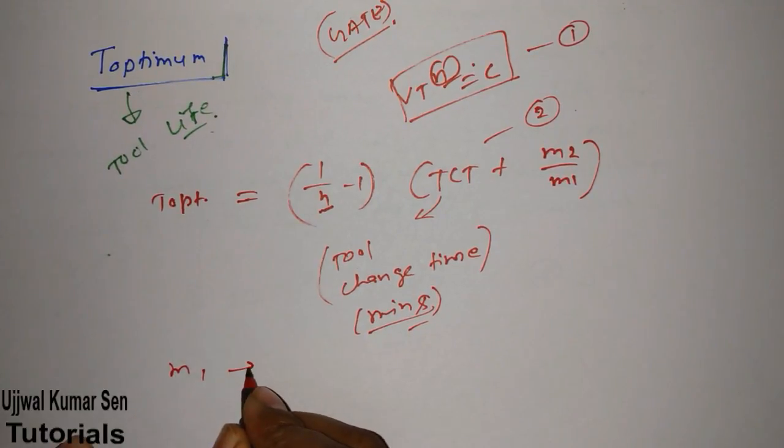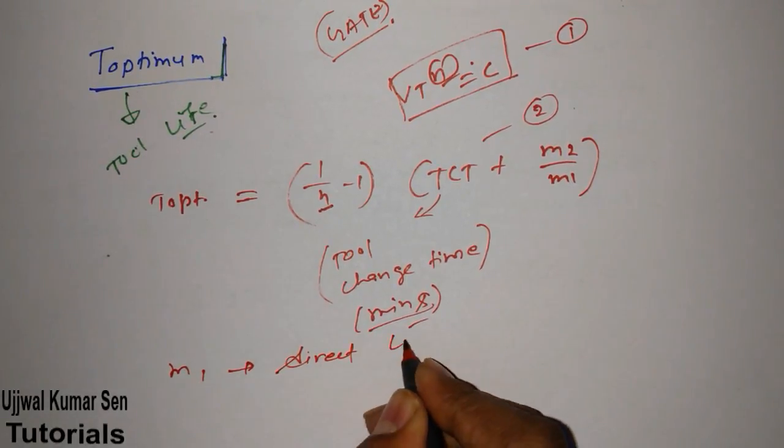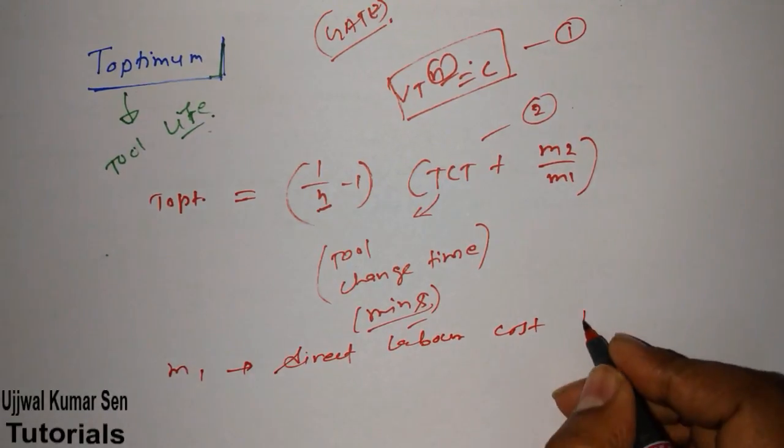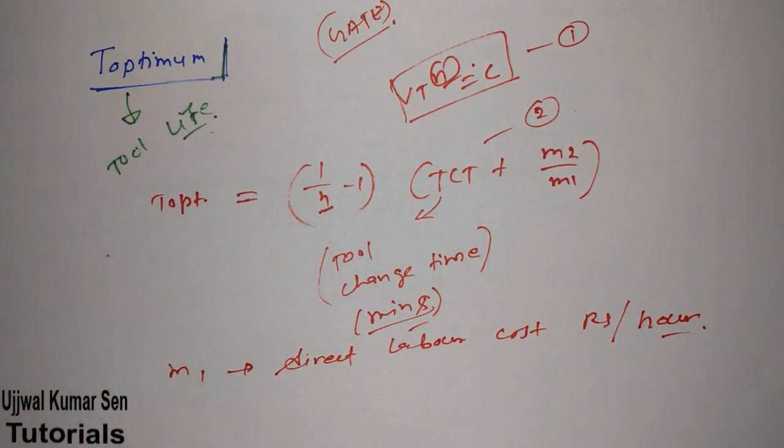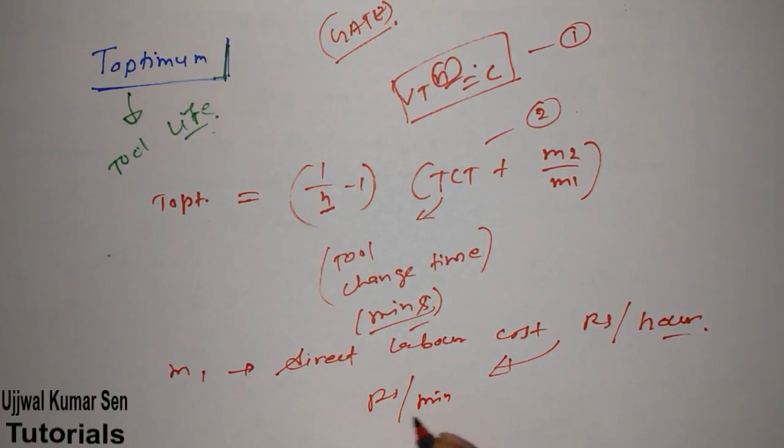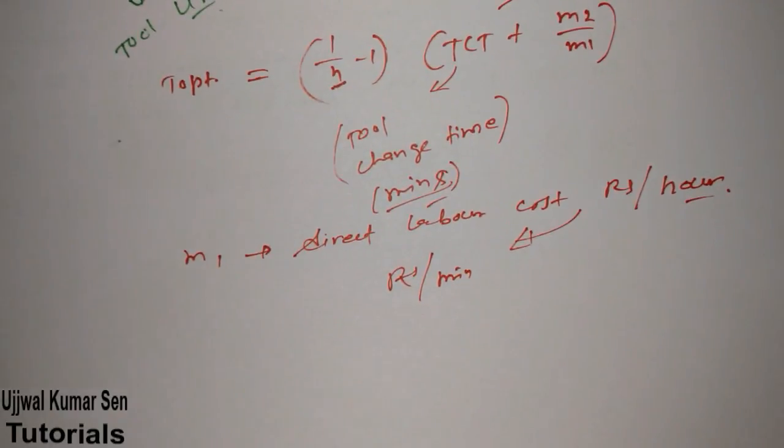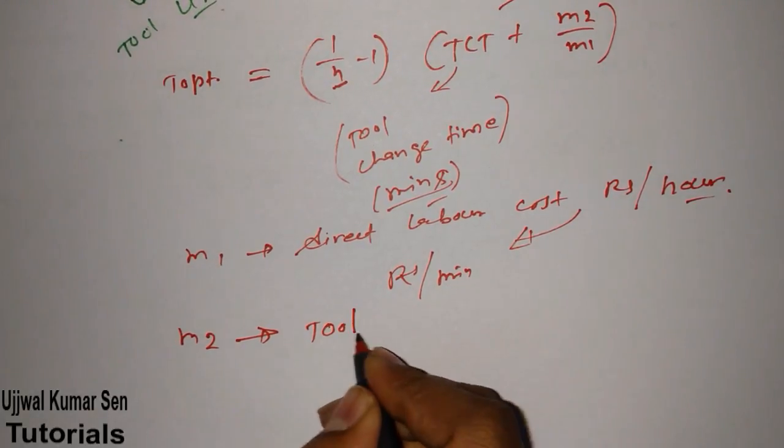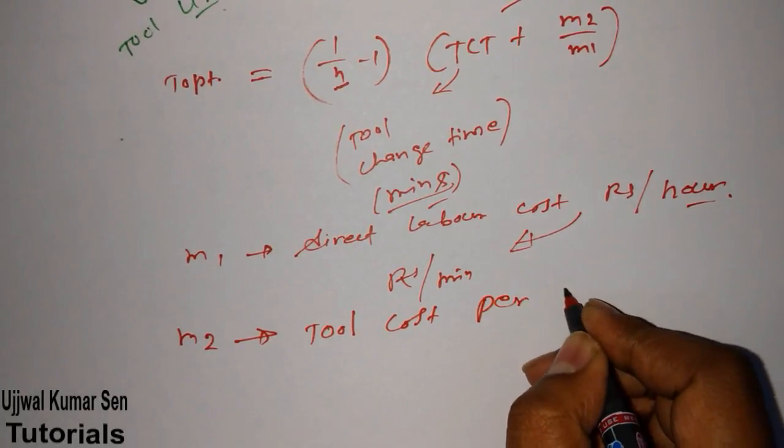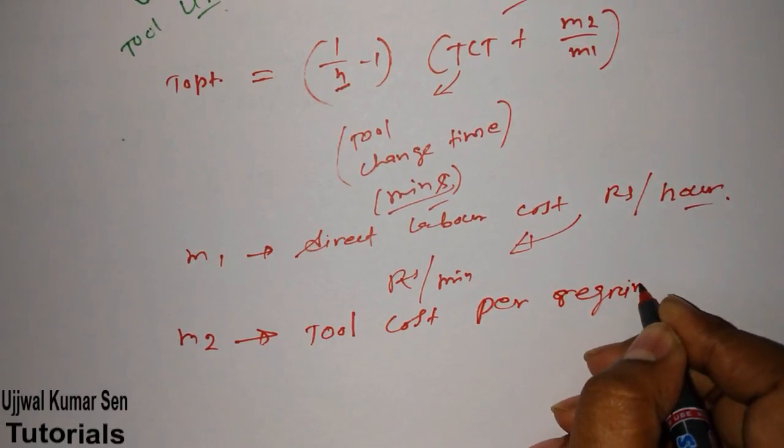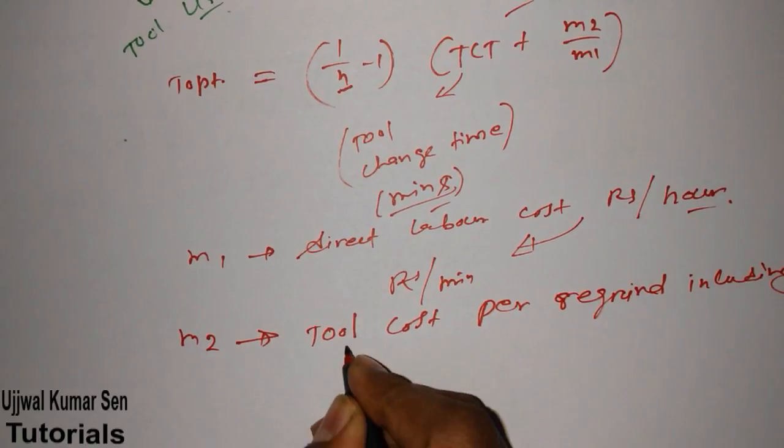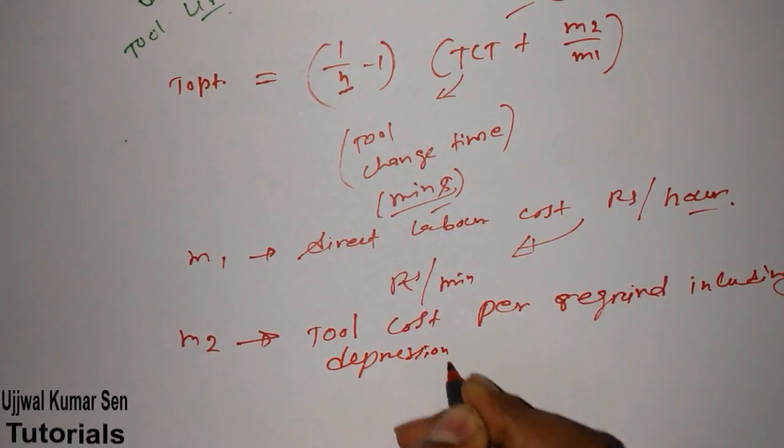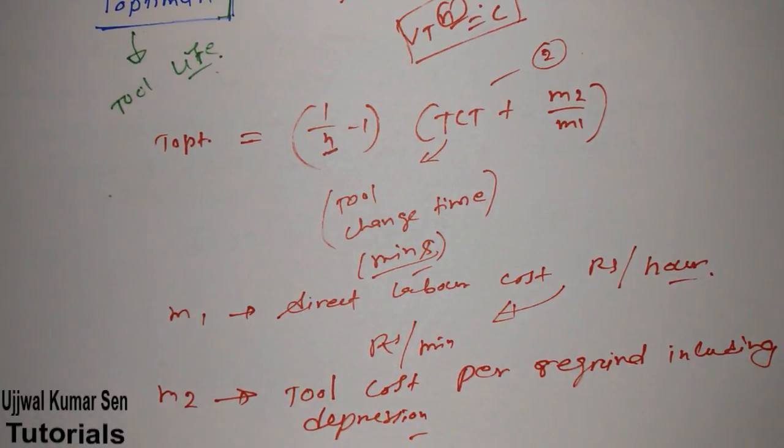T-Optimum is valid for economical manufacturing because we wanted to get maximum tool life, that means the manufacturing cost will be less. We wanted to get maximum velocity or cutting speed, meaning productivity will increase and production cost will decrease. That's economical manufacturing. Now what is M2 and what is M1? Both are most important. M1 is direct labor cost. And you will see, probably in question, they will give you in rupees per hour. Convert it into rupees per minute. M2 is tool cost per regrind including depression.